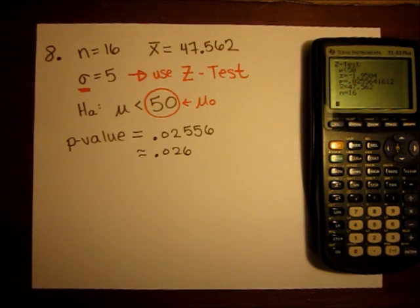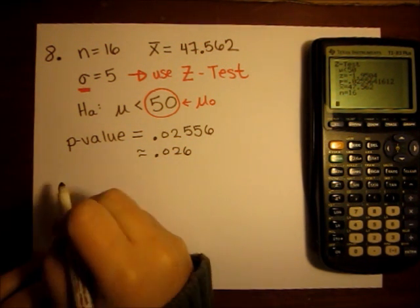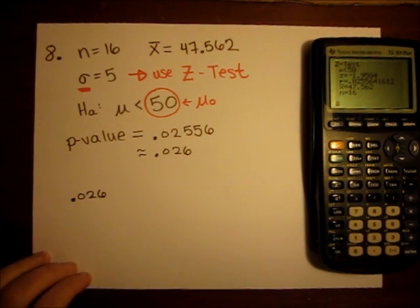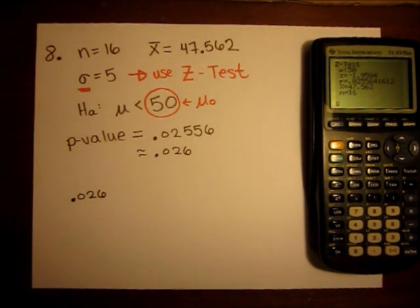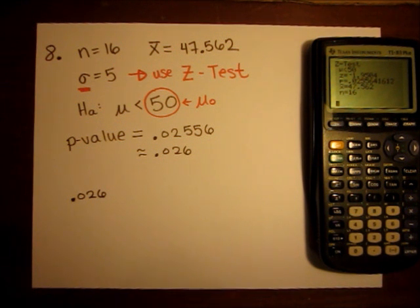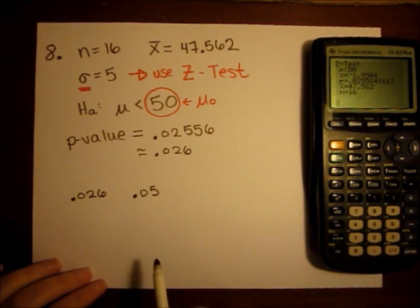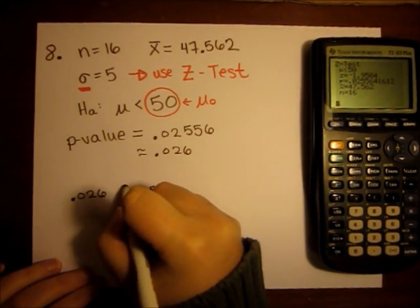So with this p value, we're asked to decide to make conclusions on what's going on at the .05 level of significance and at the .005 level of significance. So what we do is we compare our p value with the level of significances, which are usually called alpha. So the first one at the .05 level of significance, the .05 is bigger.